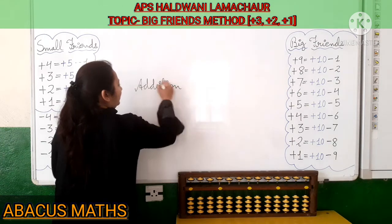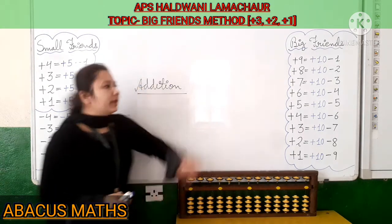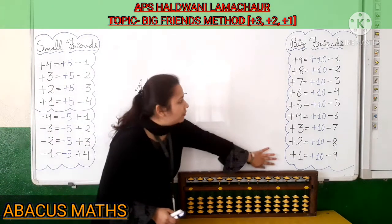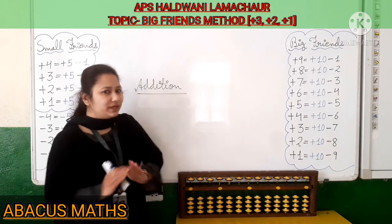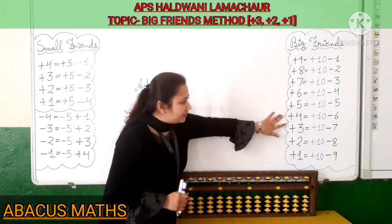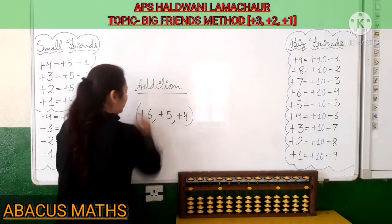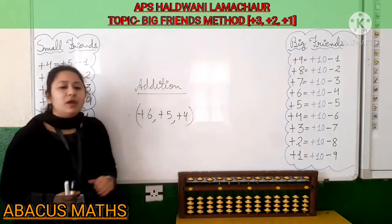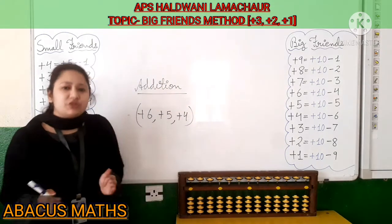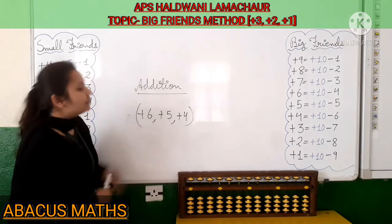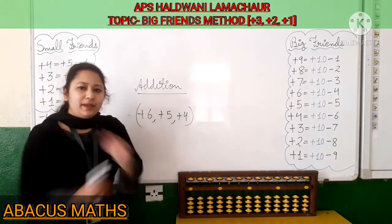As you know, we are discussing the addition formulas of Big Friends. In addition formulas, we have the numbers from 1 to 9. Plus 9, plus 8, plus 7 — these 3 formulas we have discussed in one video. Next, plus 6, plus 5, and plus 4 — these 3 we have discussed in our previous video. Now today, we will discuss plus 1, plus 2, plus 3 formulas, the addition formulas of Big Friends. With these 3, our Big Friends addition topic ends.